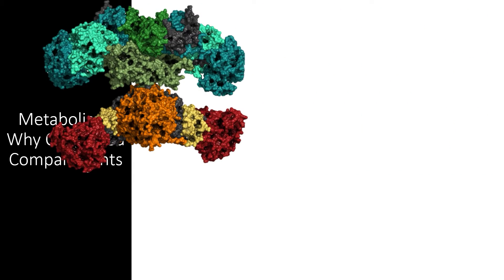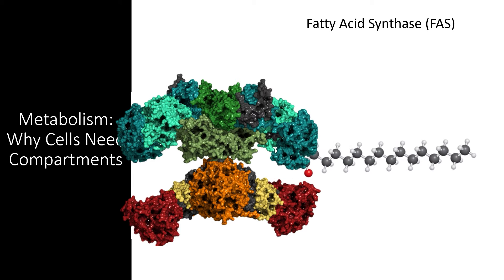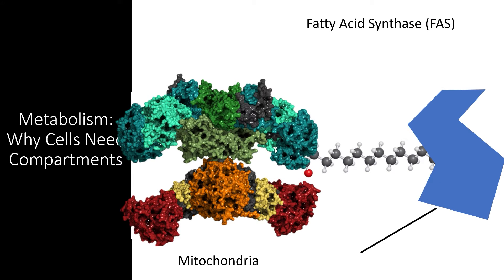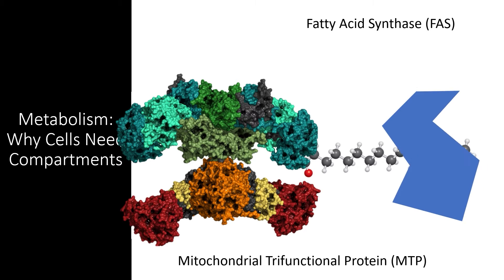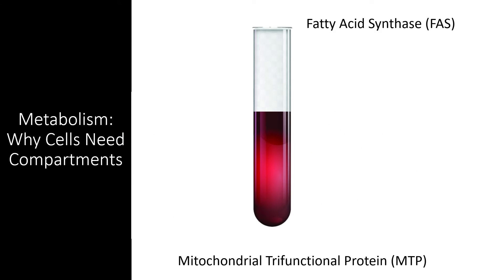Let's consider one very simple reaction: the synthesis of a fatty acid. Fatty acids are created by a protein called fatty acid synthase, which is located in the cytoplasm of cells. This massive protein complex is made of dozens of individual proteins that complete various reactions to synthesize a fatty acid molecule. Another protein, called the mitochondrial trifunctional protein, breaks down fatty acids in the mitochondrial matrix, cutting apart a fatty acid molecule into usable pieces. If you were to place both of these proteins into the same test tube with some fatty acids, nothing would happen because these proteins would constantly be undoing the work of the other. This is why compartmentalization is necessary.